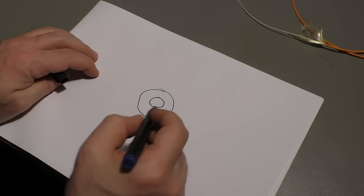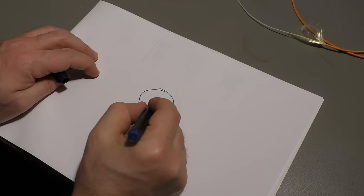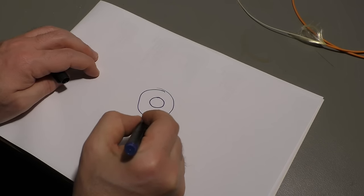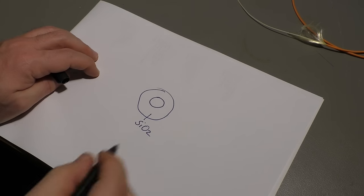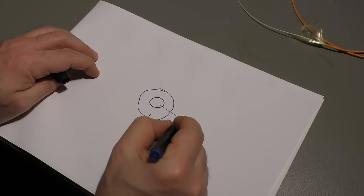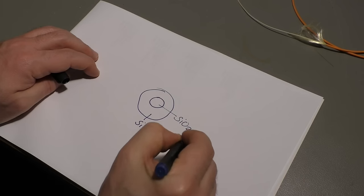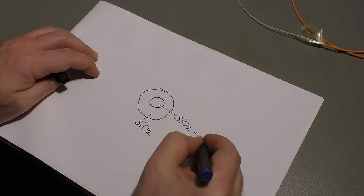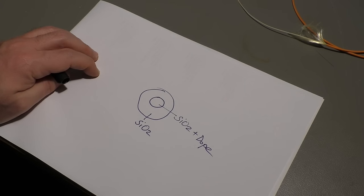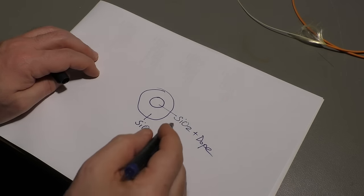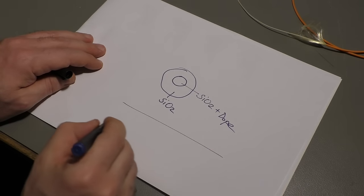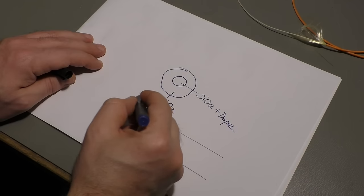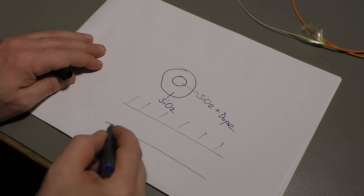It has two layers of different types of glass. It has an outer layer, which is made of silicon dioxide, and the inner layer made of silicon dioxide and some doping materials. Mostly phosphorous or germanium, that changes the refraction index of the glass.